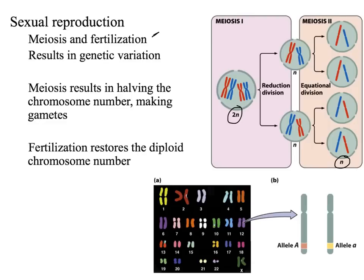In the first division, we've separated those homologs from each other. It is in meiosis I that we go from diploid to haploid — we've divided the number of chromosomes in half, and there's just one complete set of chromosomes in each of those cells. Those chromosomes are still in the replicated state, so we still have sister chromatids, but the number of chromosomes has been halved.